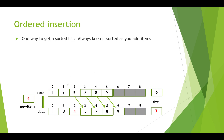Every time we add an item we're going to make sure that it goes into the right place to maintain that sorted order. For example, if we have a new item 4 that we want to put into this array of integers, we don't want to just throw it at the end after the 9, because that would mean the array would no longer be sorted. We want to put it right between the 3 and the 5. So how do we go about doing this?